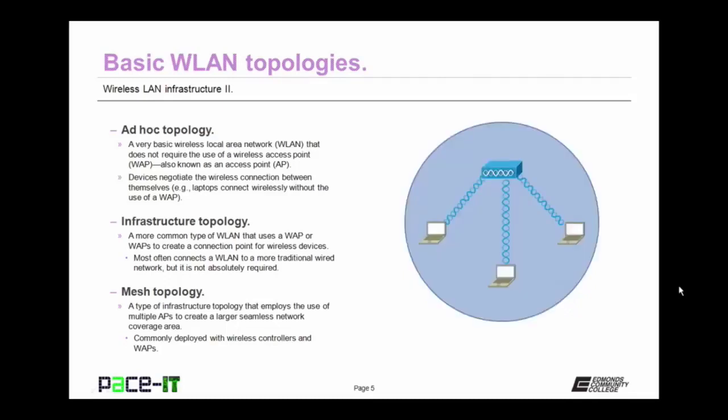Then there's the infrastructure topology. It's a more common type of wireless local area network that uses a WAP or multiple WAPs to create a connection point for wireless devices. Most often it's used to connect a wireless network to a more traditional wired network, but that wired network is not absolutely required.